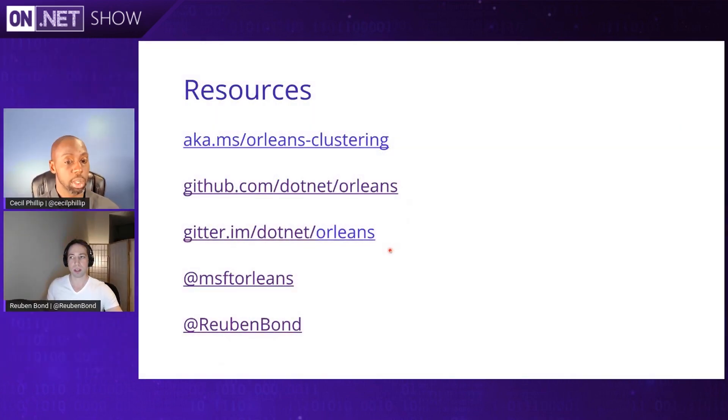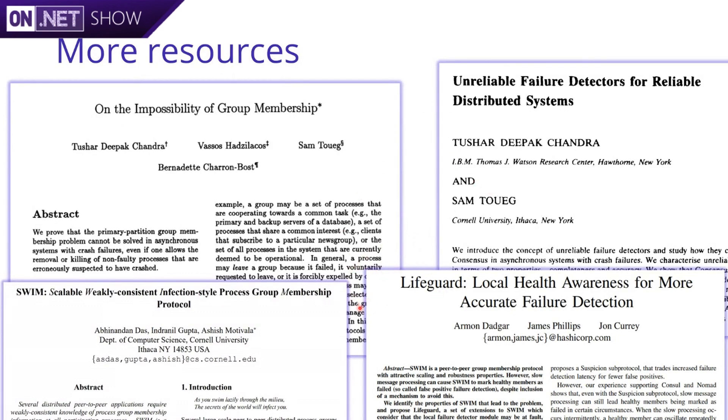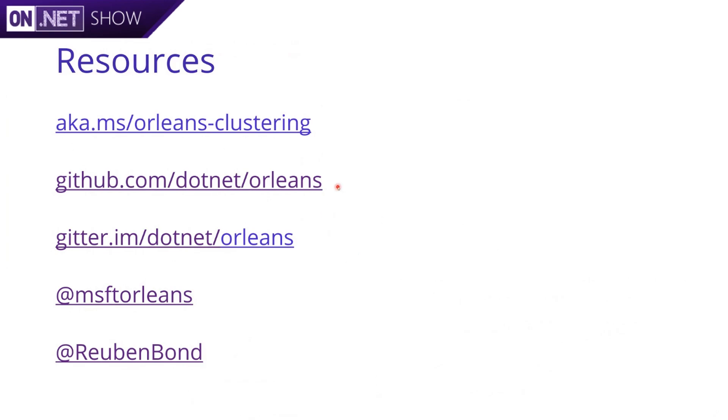Thank you again so much, Ruben, for sharing your knowledge about Orleans and how clustering works. Folks can follow Ruben on Twitter at Ruben Bond, and there are links to the GitHub channel and other places to interact with the team, submit issues, and give feedback. If you're really keen, there are also research papers to dive into — for example, the LifeGuard paper from the HashiCorp Consul folks on problems and mitigations found in clustering. For practical resources, you can come to us. This has been another episode of the On.NET Show where we learned how clustering works inside of Microsoft Orleans.